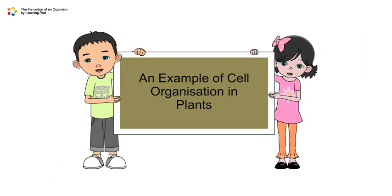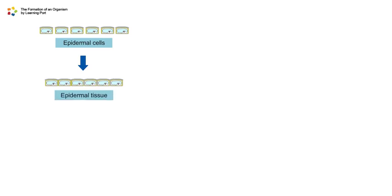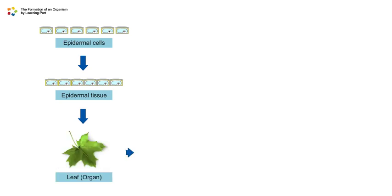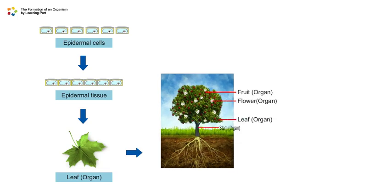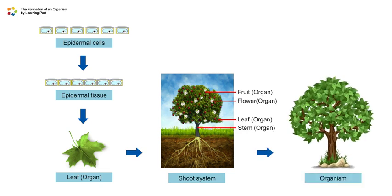Now let's look at an example of cell organization in plants. A group of epithelium cells combine to form the epithelium tissue. A group of different tissues that work together to perform a specific function form an organ. A group of different organs that work together to perform a specific function form a system. All systems work together to make up an organism.